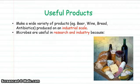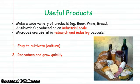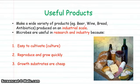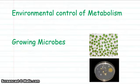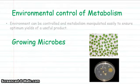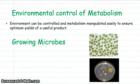We use microbes generally because they are easy to cultivate, they reproduce and grow quickly, the growth substrates required are relatively cheap, and their metabolism can be manipulated relatively easily. If we look at environmental control of metabolism, the environment can be controlled and metabolism manipulated easily to ensure optimum yields of the product that you are using the microbes to make.